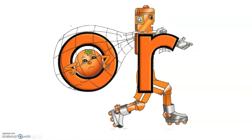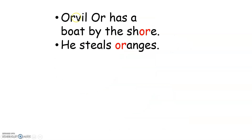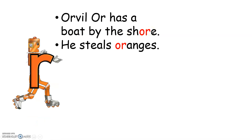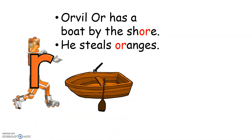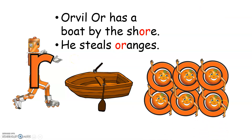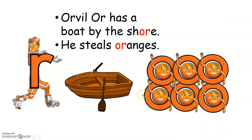Now here we have Orville R. He steals oranges of course. Orville R has a boat by the shore. He has a boat by the shore and he steals oranges.